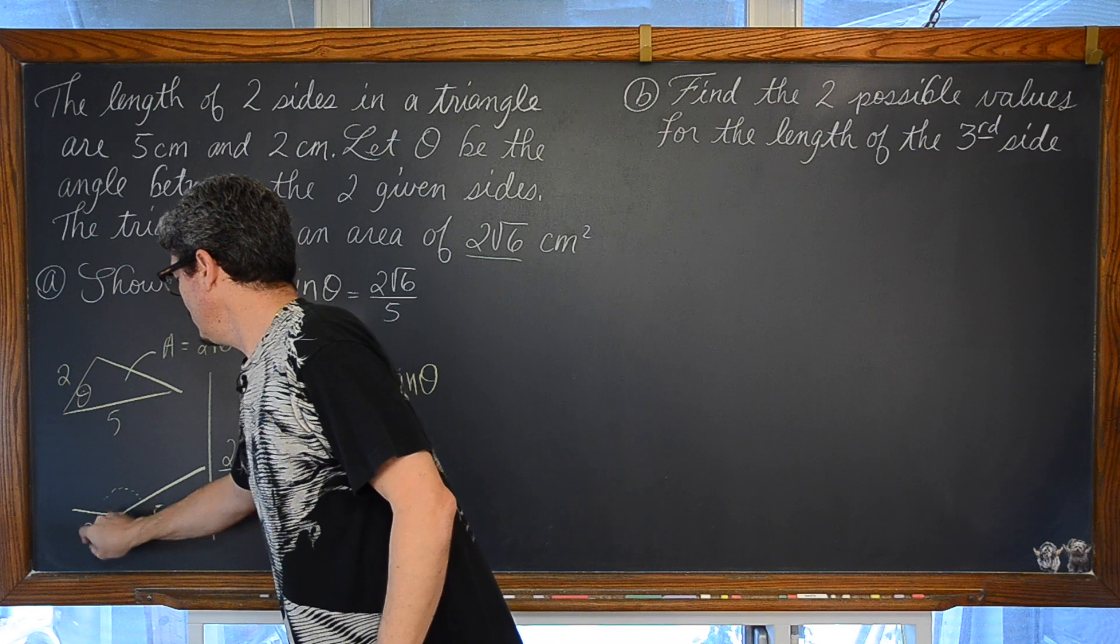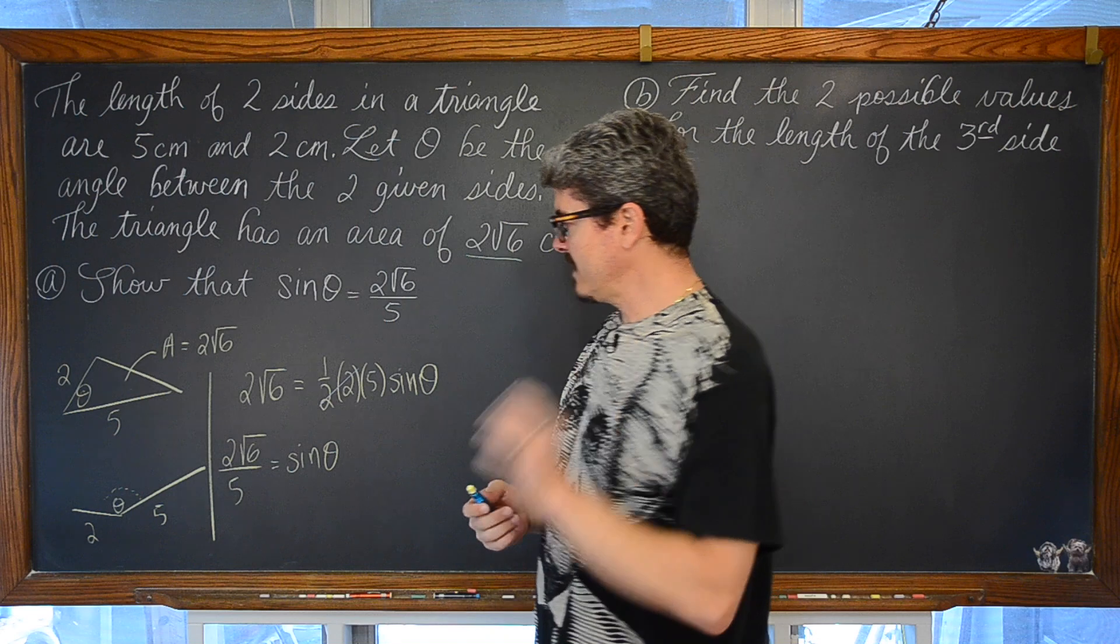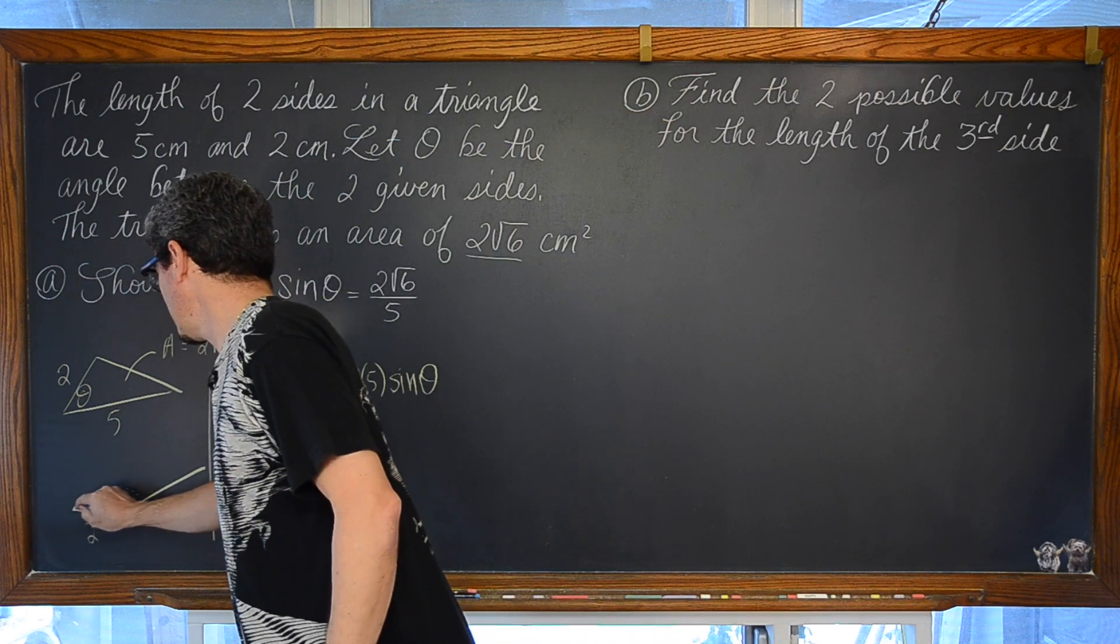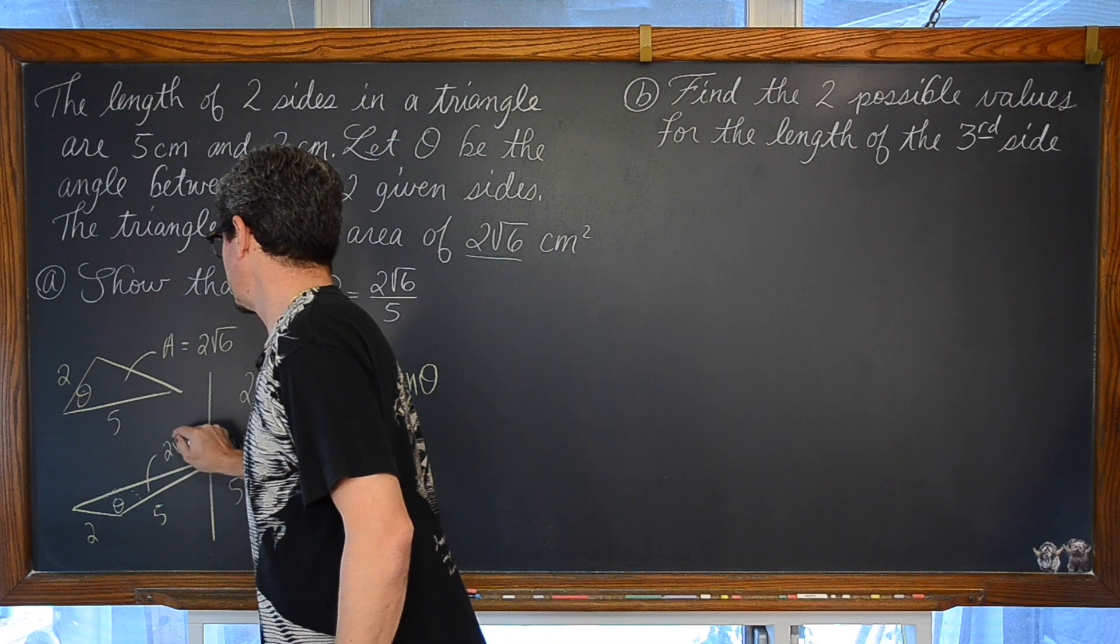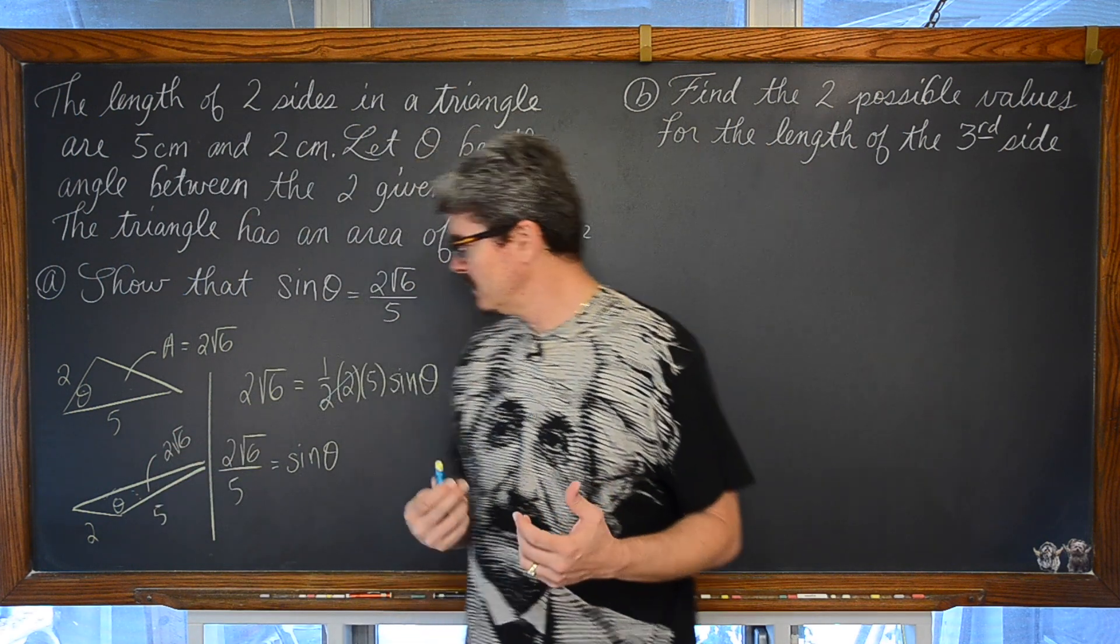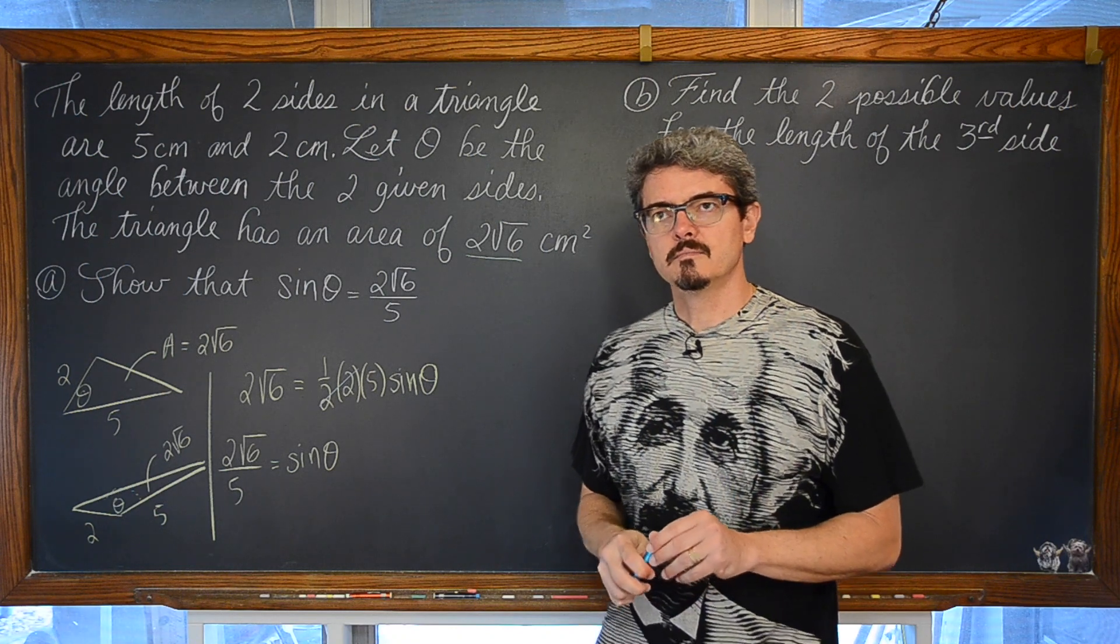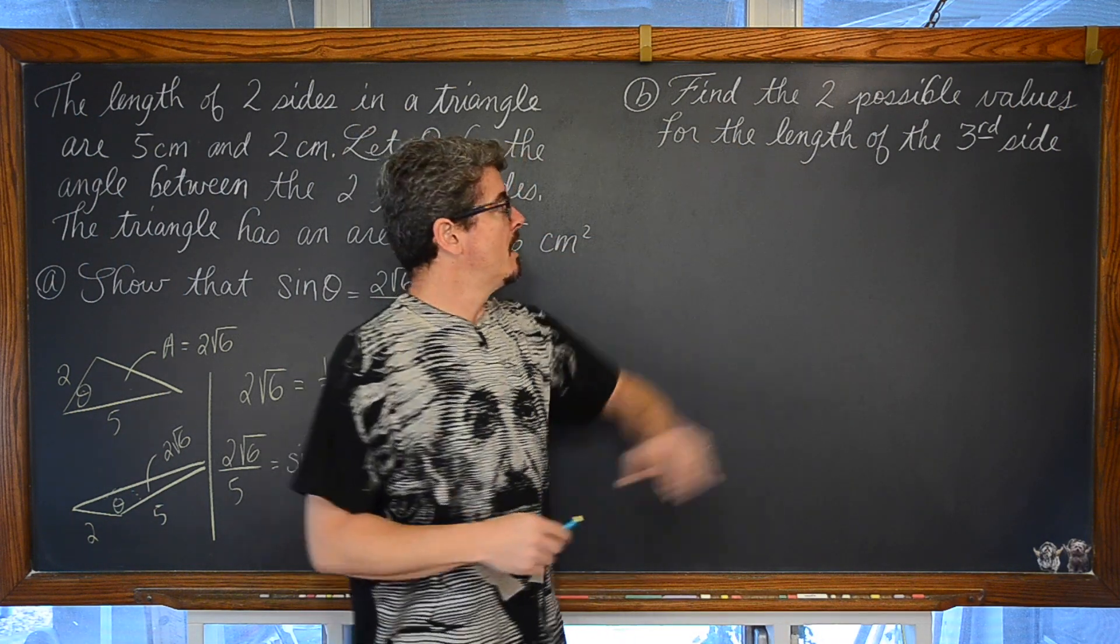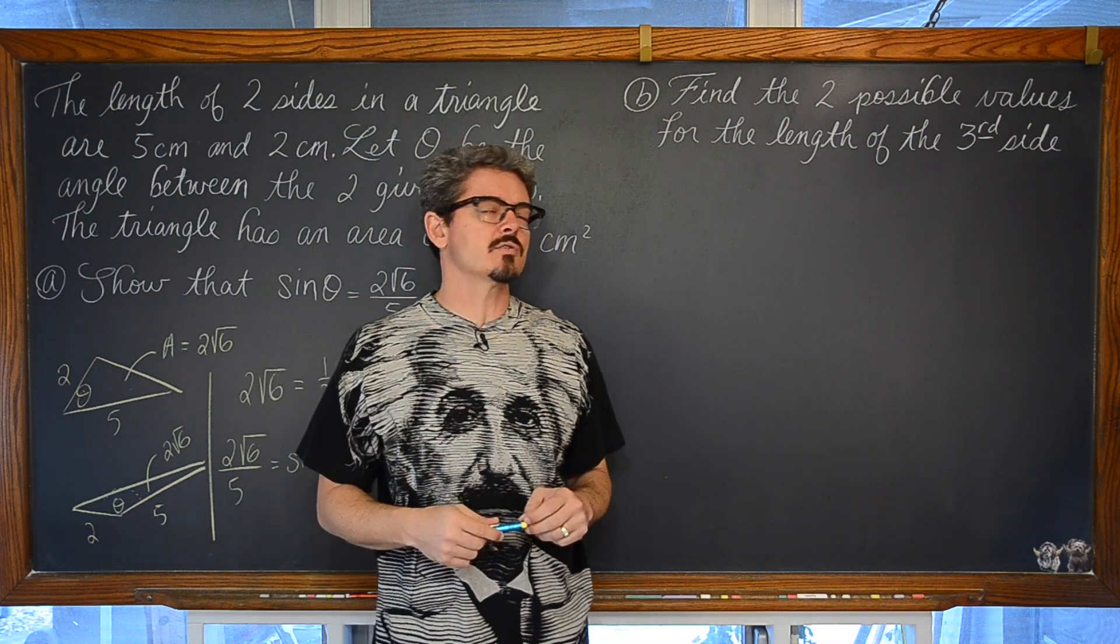So, with 2 and 5 there is another angle measure, not that we are going to find the actual angle measure that will give you that same area of 2 square root of 6. How are we going to figure that out? Well again, you have a question here that is asking for a missing part, a third unknown side of a potentially non-right triangle.